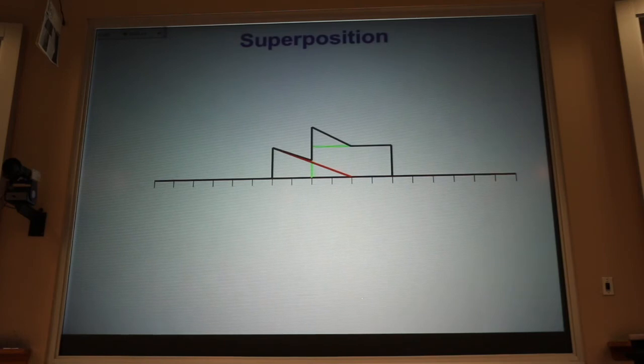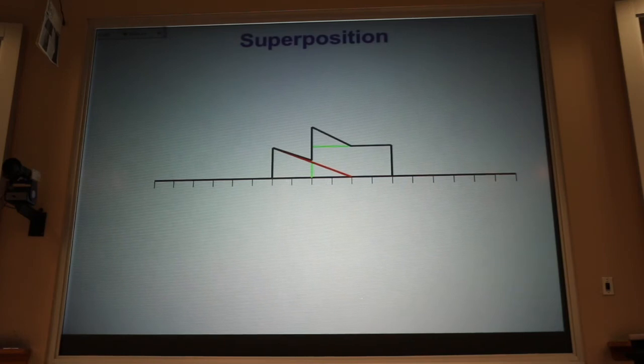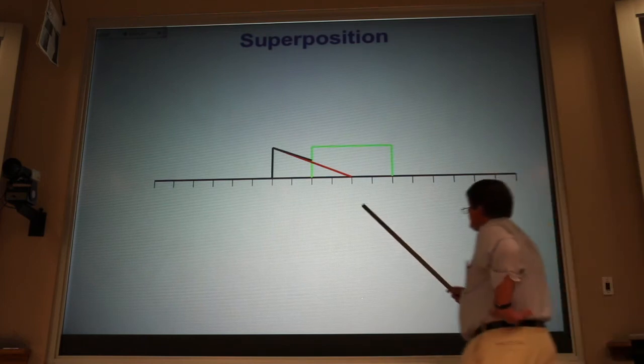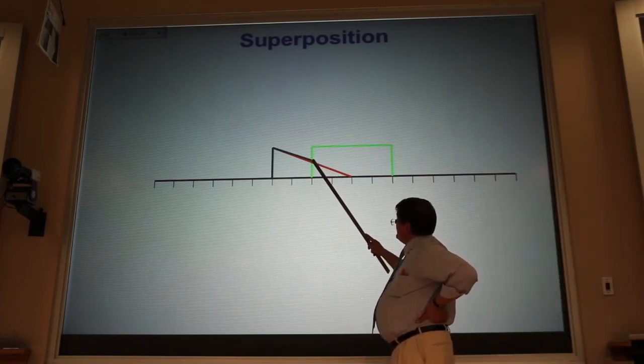So like, where the red and the green intersect, why did that point, why is the point right where they intersect? Shouldn't it be, that point, would that point be higher?